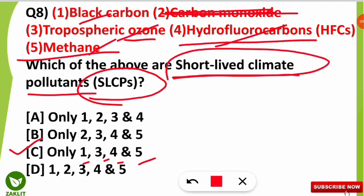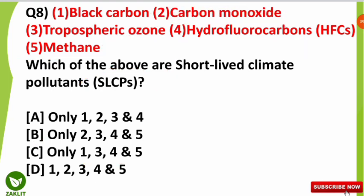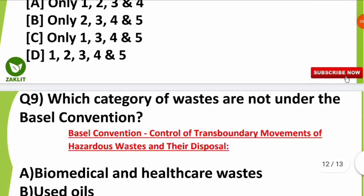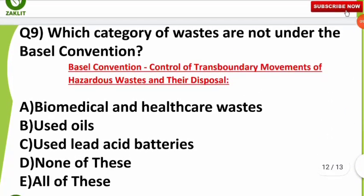These compounds are called short-lived climate pollutants because in our atmosphere they live for a very short period of time — some months or a few years. Carbon dioxide, by contrast, lives for many thousands of years in the atmosphere, which is why it is not categorized as a short-lived climate pollutant.